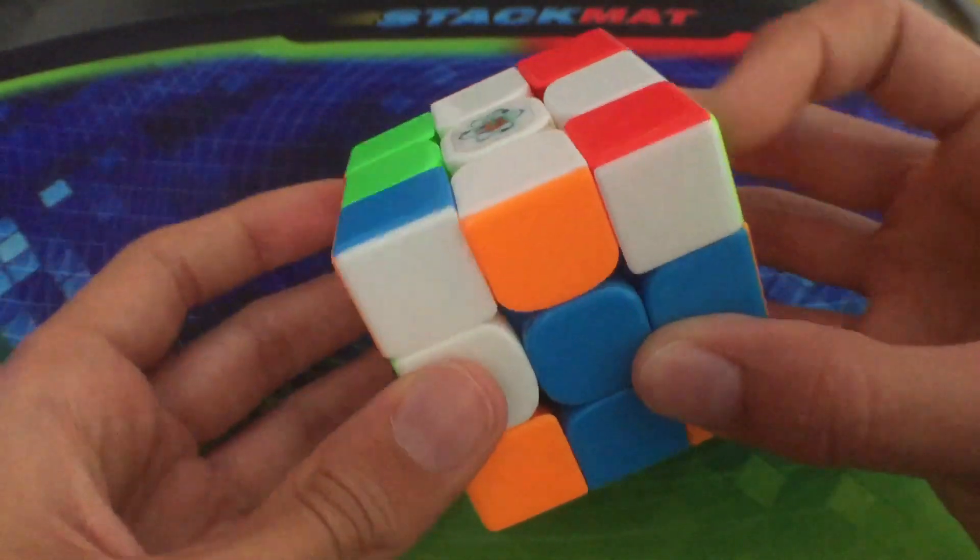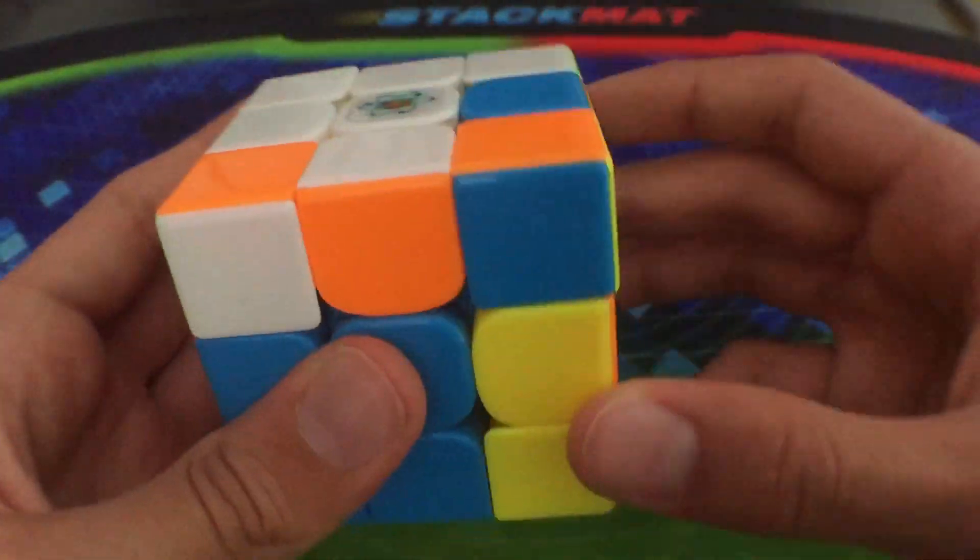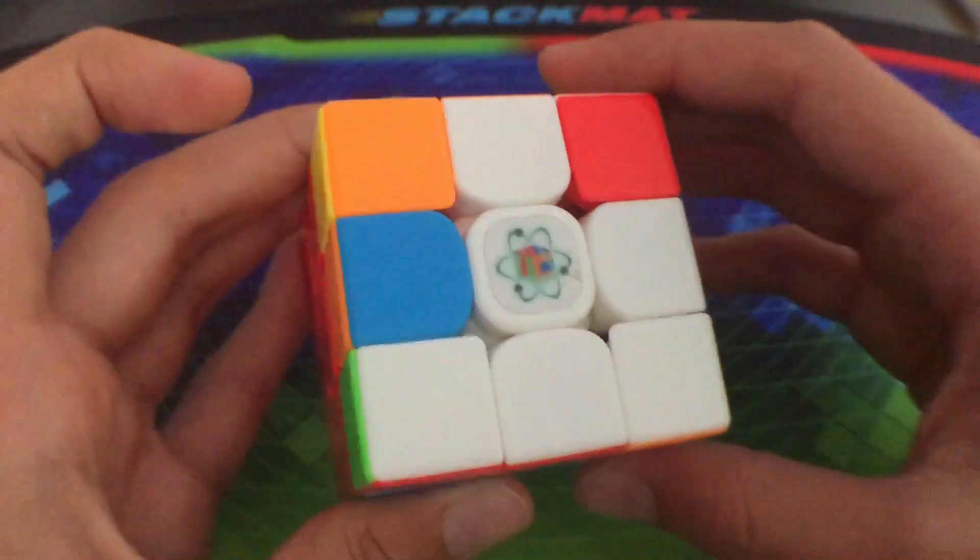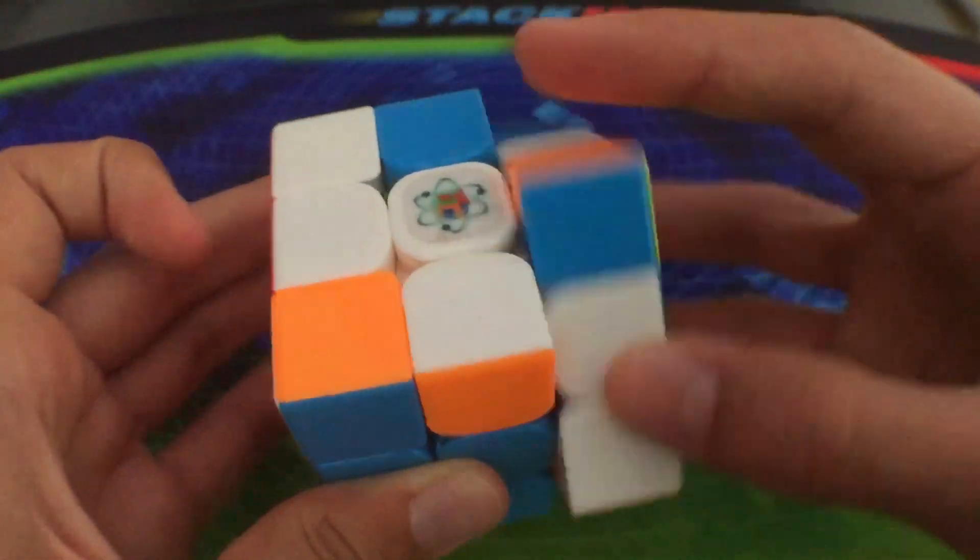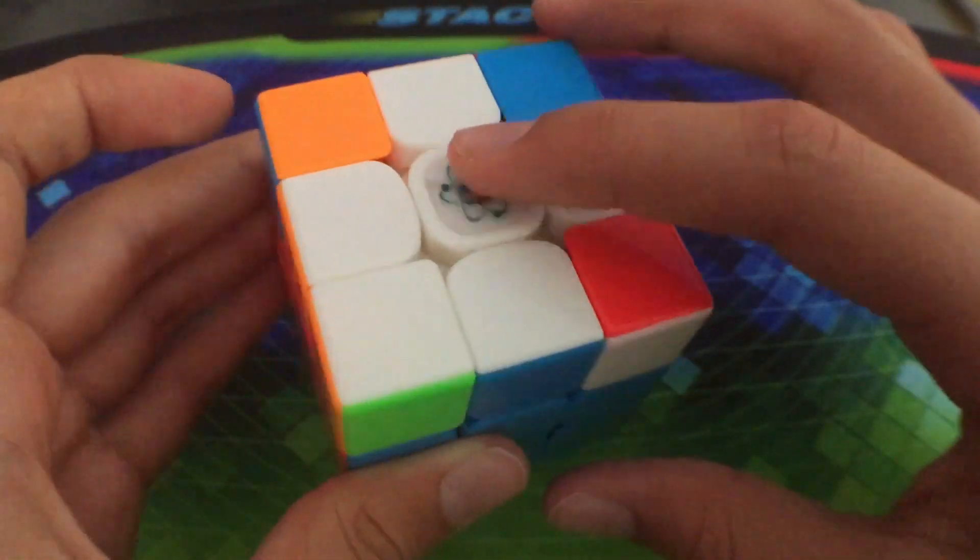So this one was a lot of moves actually. I did R U2 R prime which takes it out, and then I just did this easy case which we just did before. And now we have just a normal OLL and a PLL skip.